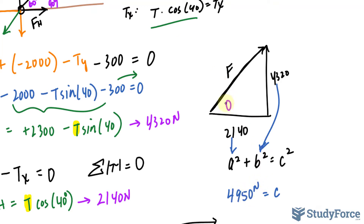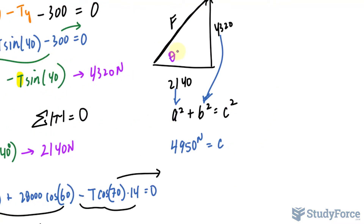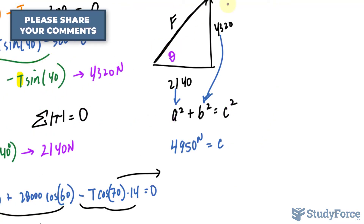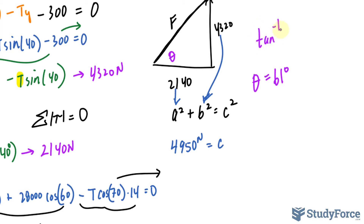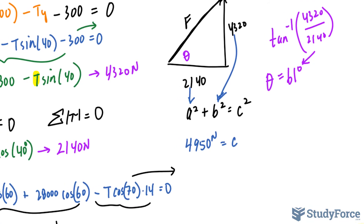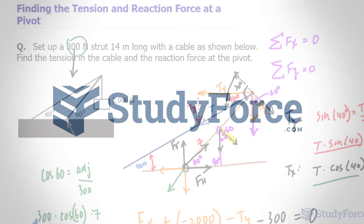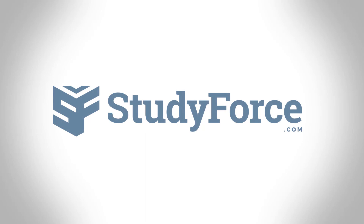If the angle of the reaction force is also required, you would use the inverse tangent of opposite over adjacent, and the angle would be 61 degrees. And so that is how to find the tension and reaction force at a pivot.